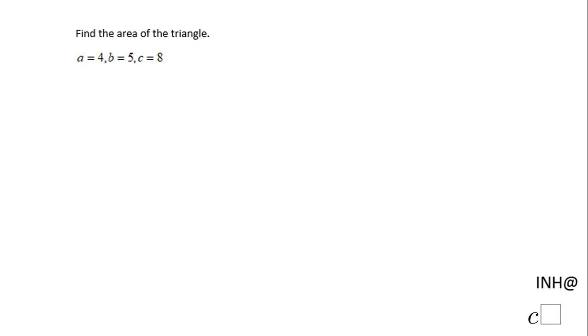Welcome back to I Need Help at C Squared. In this example, we find the area of a triangle where three sides are given: A, B, and C.